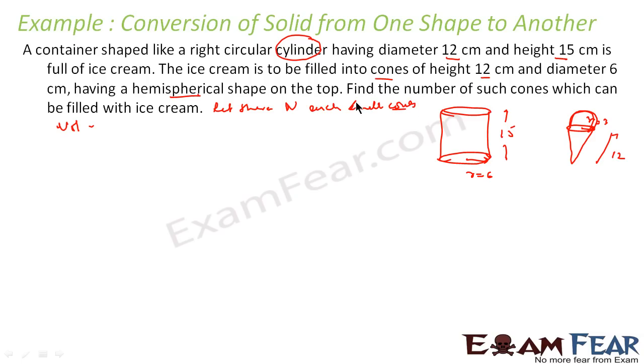So we can say volume of bigger cylinder ice cream will be equal to n into volume of smaller cone ice cream. Why? Because the ice cream volume is constant. If you understand this equation, the volume of bigger cylinder ice cream equals n into volume of smaller cone, the question is solved. That is the thing we have to understand here.